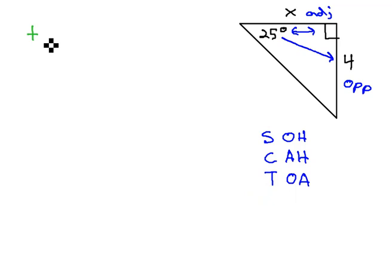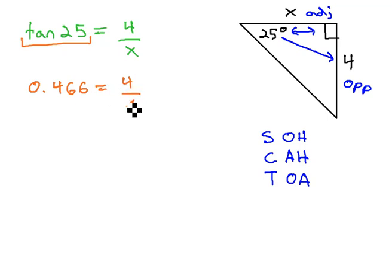So what we will do is we will take the tangent of the angle, the tangent of 25 is equal to opposite over adjacent, 4 over x. To help us out with the tangent of 25, we can either use a calculator or a trig table. The tangent of 25 to three decimal places is 0.466 equals 4 over x.